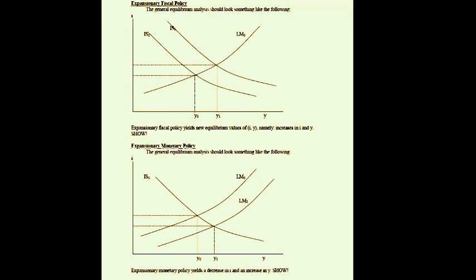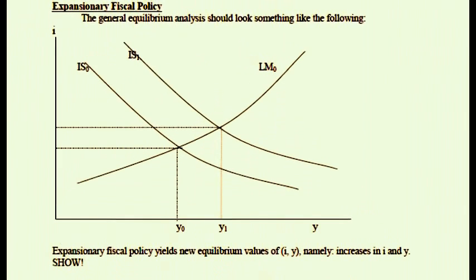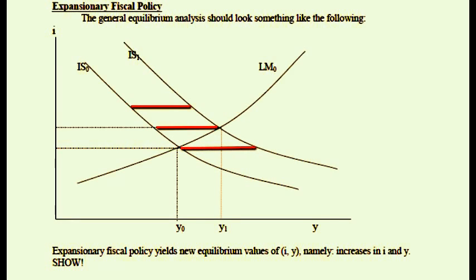We now discuss policy consequences, focusing on expansionary fiscal policy and expansionary monetary policy. Expansionary fiscal policy shifts the IS curve to the right. Ceteris paribus, increasing government spending while holding interest rates constant grows the economy — increases in Y for every level of I. Every point on the Y panel shifts to the right, so the entire IS curve shifts right. This traces out an equilibrium with a higher interest rate and a higher output level.